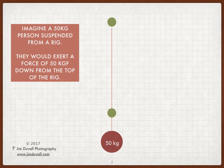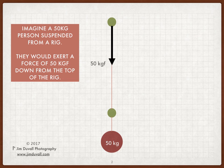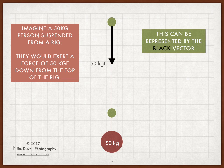Imagine a person suspended from a ring that is then connected to an anchor point in the ceiling. If the person has a mass of 50 kg, they would put a downward magnitude 50 kg force on the anchor point. We can show this with a vector starting at the anchor point and pointing down. When we draw vectors, we show their magnitude by their length and their direction with an arrow as shown by the black vector.